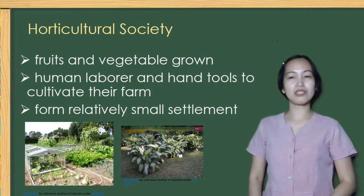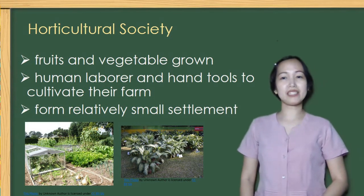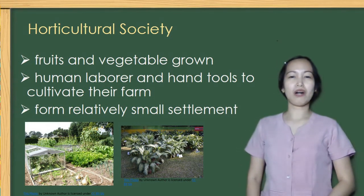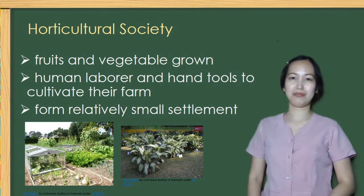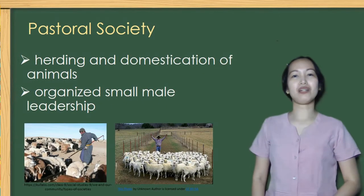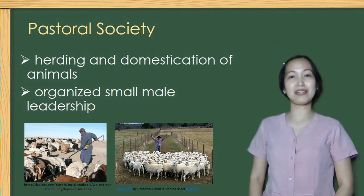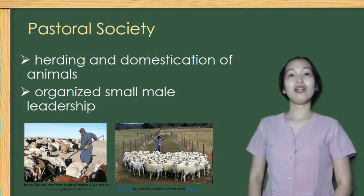Second is horticultural society. Their main form of food production is fruits and vegetables grown in the farm or garden, and they form relatively small settlements. Third is pastoral society. The focus was on herding and domesticating animals, and they also organized small male leadership.